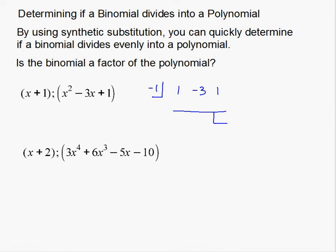Anyway, now I want to go through the synthetic substitution process. So bring this 1 down. Negative 1 times 1 is a negative 1. Add this down to get negative 4. Multiply here. Bring that up to get 5. Add that down to get 6. So what it looks like here is that I have a remainder of 6. Now right there, that tells you that x plus 1 is not, I repeat, is not a factor.